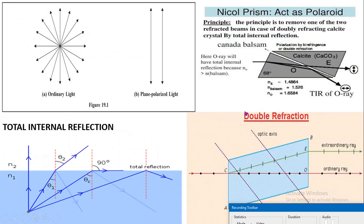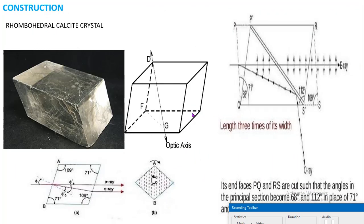For the construction of the Nicol prism, we first take a rhombohedral calcite crystal. Rhombohedral means it belongs to the hexagonal system. The rhombohedral shape consists of six parallelogram faces — here is the first parallelogram face, here the second, here the third, the fourth on the backside, the fifth, and the sixth parallelogram face.